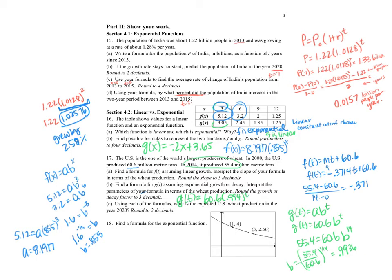Using each formula, what is the expected wheat production in 2020? For that, we're just going to plug in T equals 20 to both. We'll get F of 20 and G of 20 using the functions. When we plug that into F, we get negative 0.371 times 20 plus 60.6, which gives us 53.18. For G of 20, I have 60.6 times 0.994 to the 20th power, which gives me 53.73.